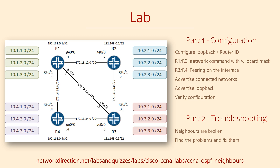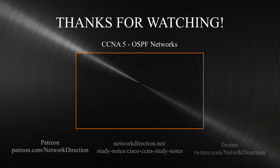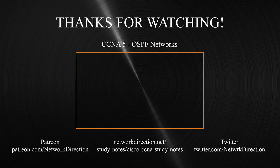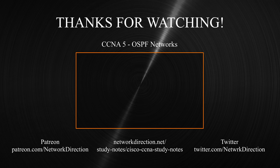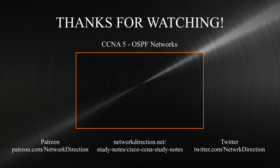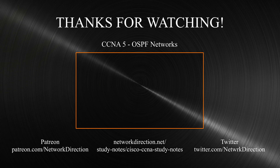To make it more fun, on R1 and R2 you should use the network command with a wildcard mask. On R3 and R4, you should configure peering per interface. You can decide which of these two methods you prefer. For part two, as usual, it's the same topology but the network is broken — neighbors aren't forming as they should be. Find the faults in the network and resolve them. That's how OSPF neighbors form adjacencies. The next video looks at more OSPF complexities including network types, neighbor states, and the OSPF database.